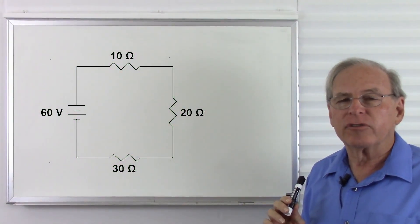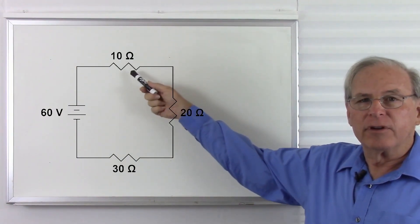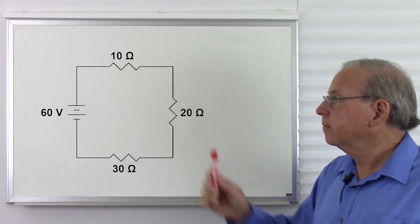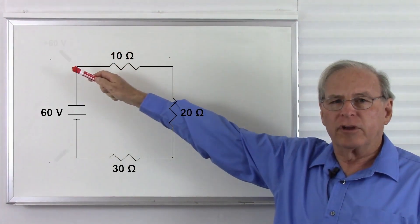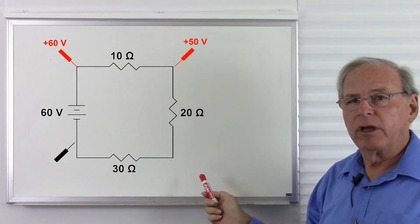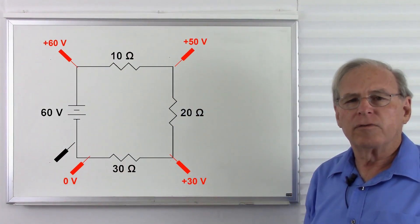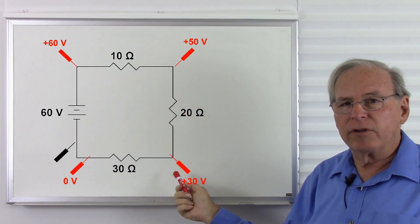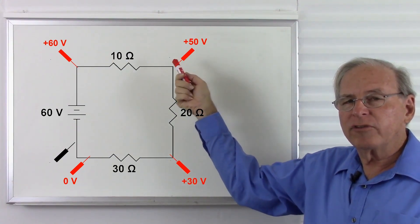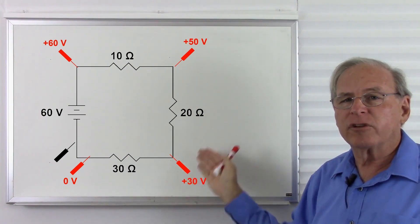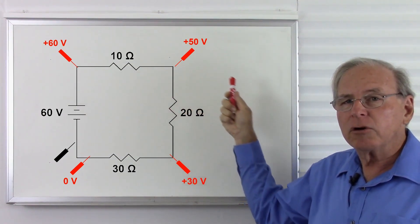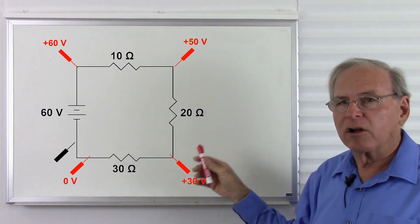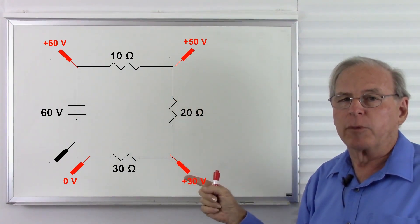Now let's double these resistances and see what happens — now we have 10 ohms, 20 ohms, and 30 ohms. We still have 60 volts, 50 volts, 30 volts, zero volts — the voltage didn't change. We still have half of our resistance, one-third of our resistance, one-sixth of our resistance. So the ratio of resistances didn't change, and the ratio of voltages didn't change. The voltage is proportional to the resistance — as long as the resistances stay proportional, the voltages will stay proportional.